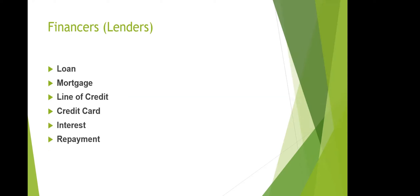For financing, you can use different loans, mortgages, or lines of credit. All of these charge interest, and you need to pay both principal and interest. Loans, mortgages, and lines of credit can have different interest calculations and different payment structures depending on the type of financing.